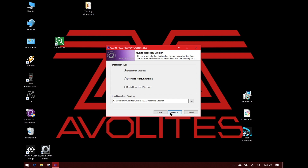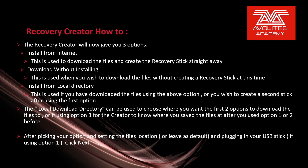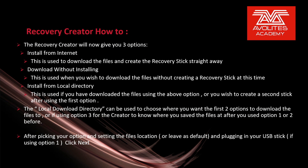We'll now be presented with the three installation types. The first one: Install from Internet — this is used to download files and create the recovery stick straight away. Download without installing — this is used when you wish to download the files without creating a recovery stick at this time. Install from local directory — this is used if you've downloaded the files using the above option or wish to create a second stick. The local download directory can be used to choose where you want the files to download, or if you're using option 3, where you saved the files previously.